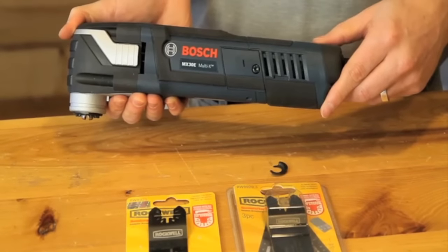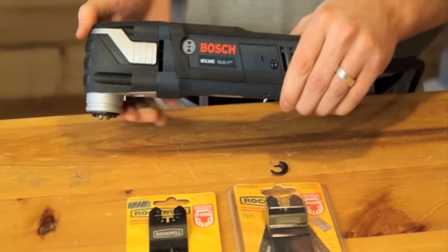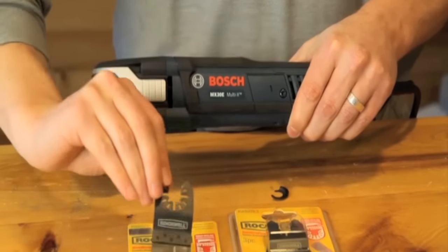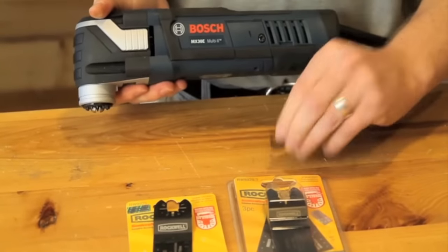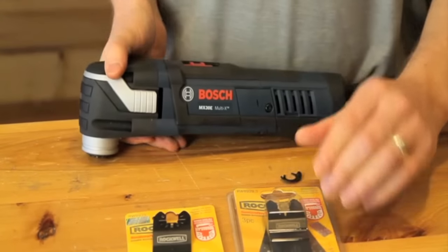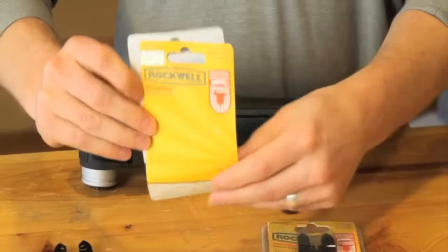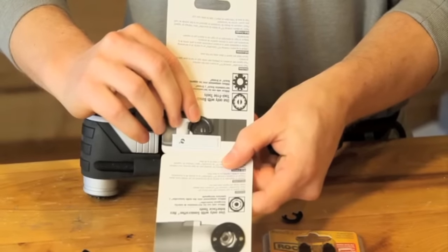Now if you're the owner of a Bosch oscillating tool with a quick change mechanism, you can still use all the new universal fit accessories by Rockwell on your tool. For added security, we've included a spacer in all the Rockwell accessory packaging. Just make note that the spacer is included in the insert card of your packaging material.